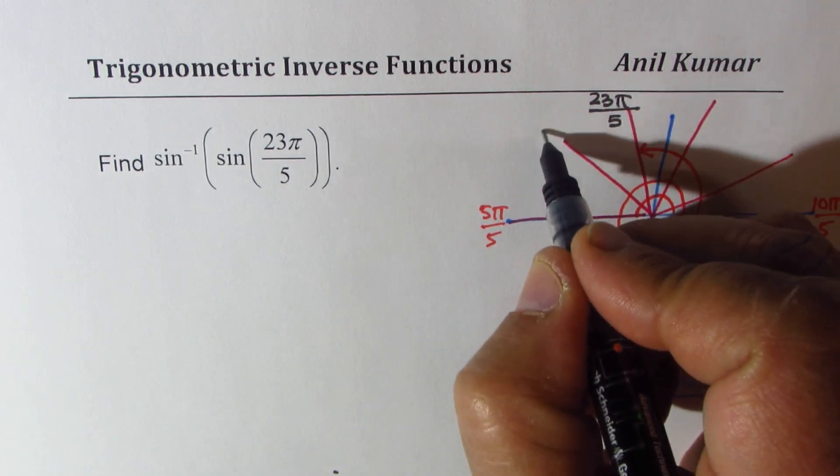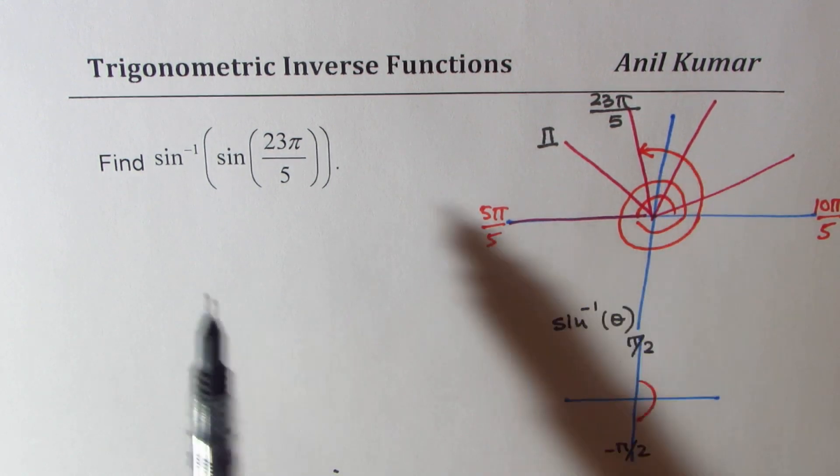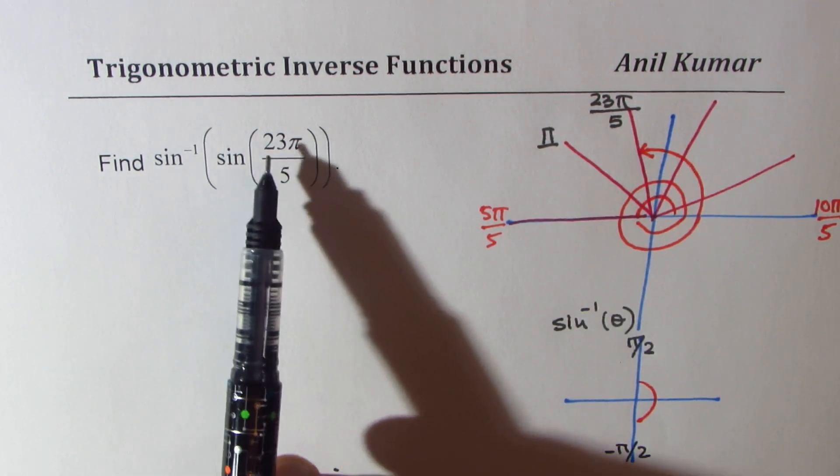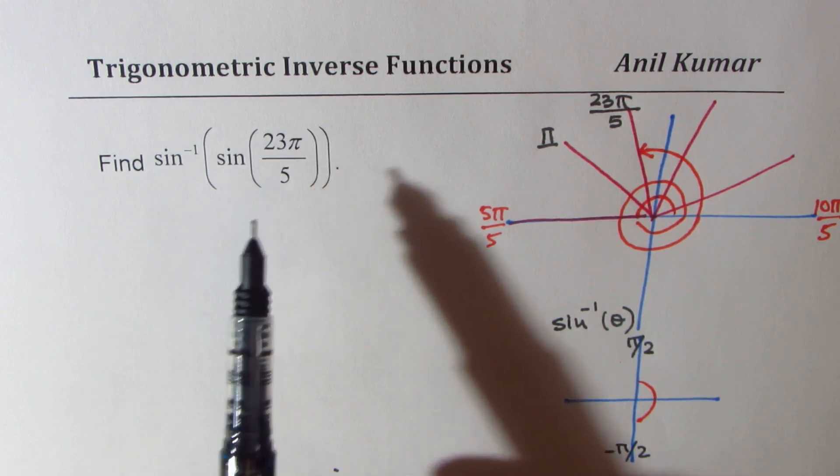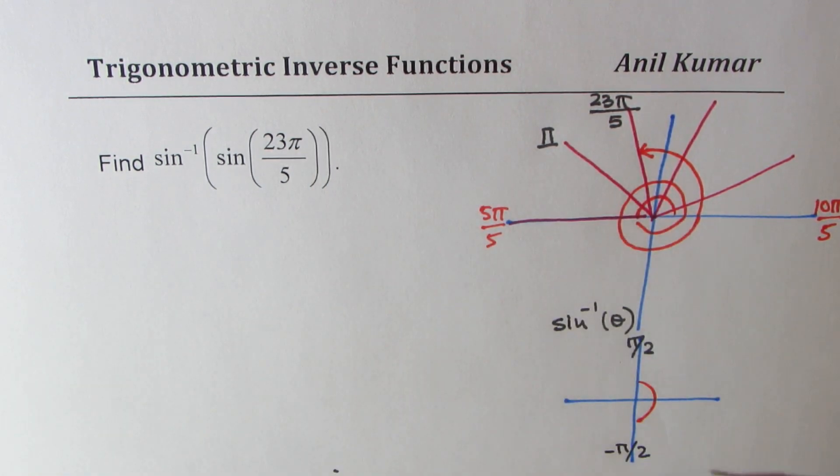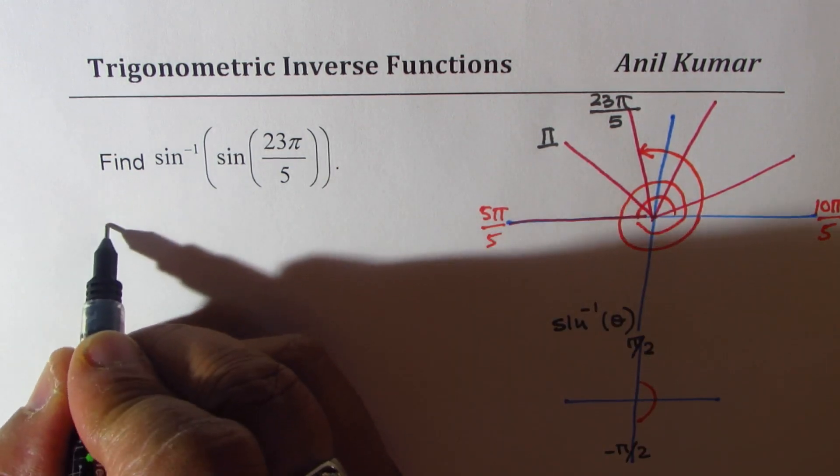However, we are in quadrant 2. So that is why the solution of this will not be 23π by 5. It is going to be different. Is that clear? So that is the basic understanding. So I hope that is absolutely clear.